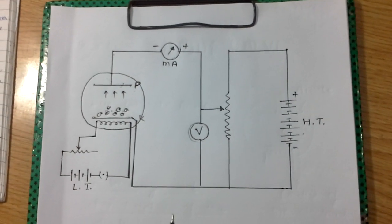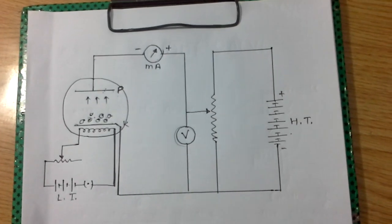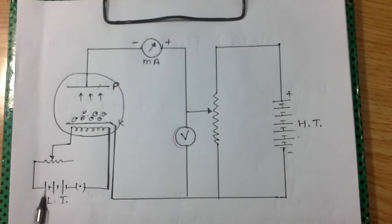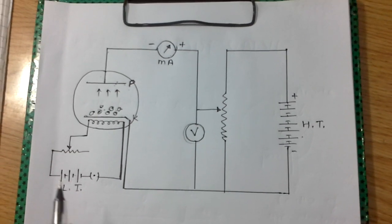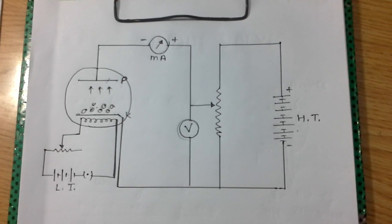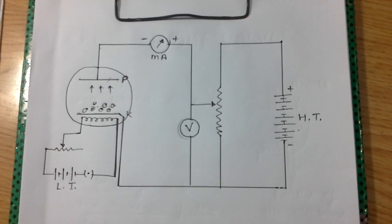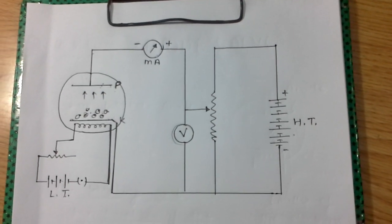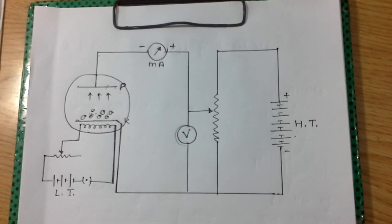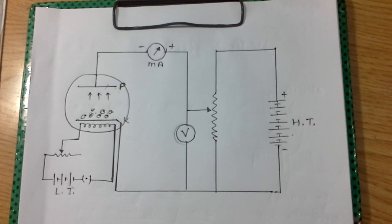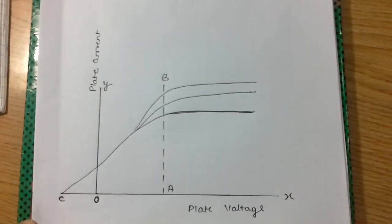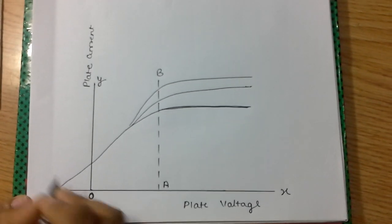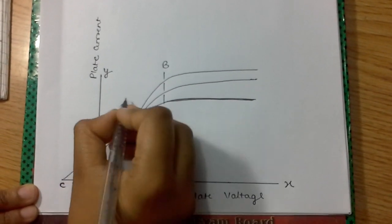Since the electron cloud is formed, we will consider three cases: when the plate voltage is zero or negative, when the plate voltage is increasing (positive), and when there is a very high enough plate voltage. To describe this, we will draw a graph plotted between plate voltage versus plate current.